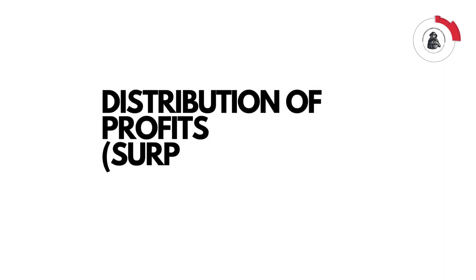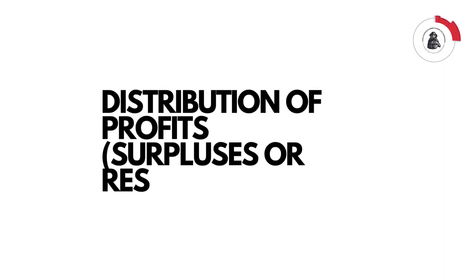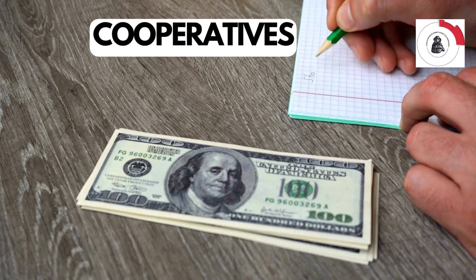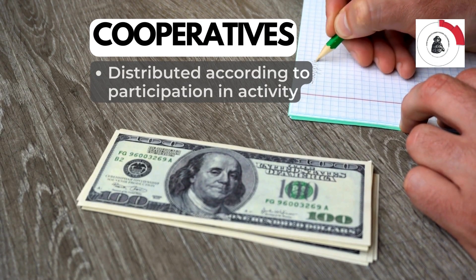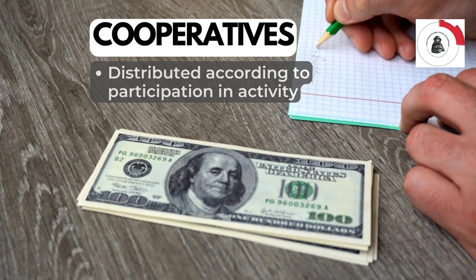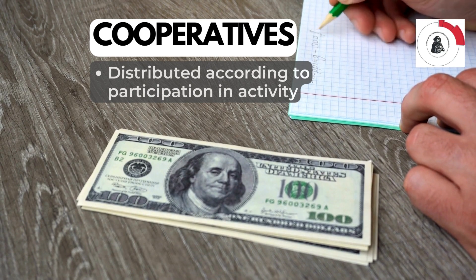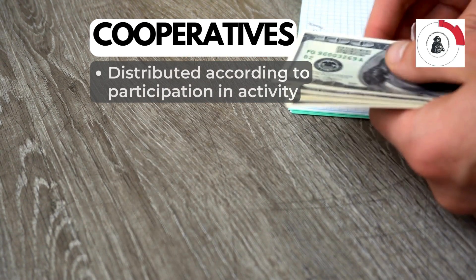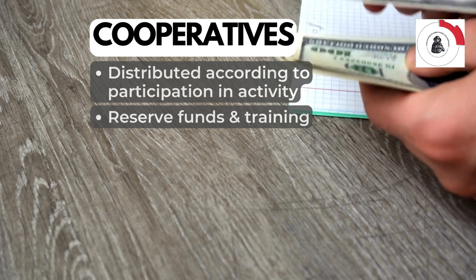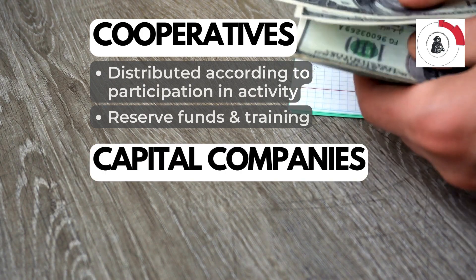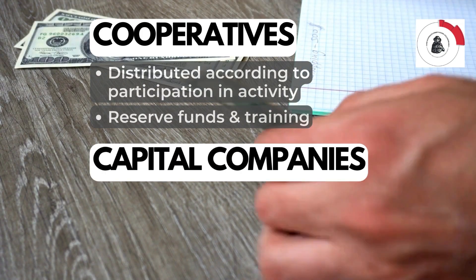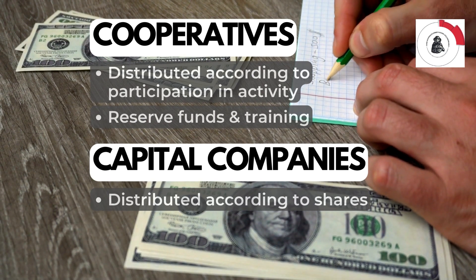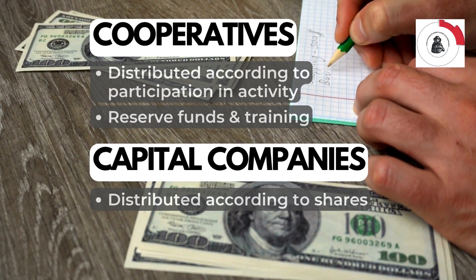Distribution of profits, surpluses, or results. In cooperatives, profits are distributed according to the participation in the cooperative activity, giving priority to personal productive effort. There is also an obligation to keep part of the surplus as reserve funds and for education. In capital companies, profits are distributed according to the number of shares held by each partner or shareholder, and the amount of the investment made takes precedence.